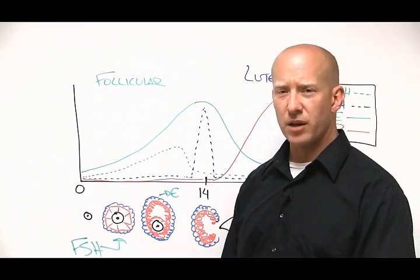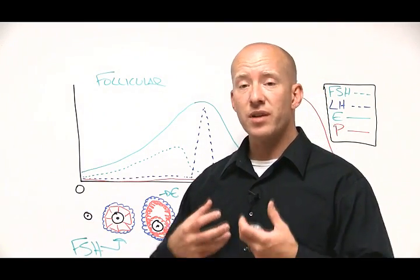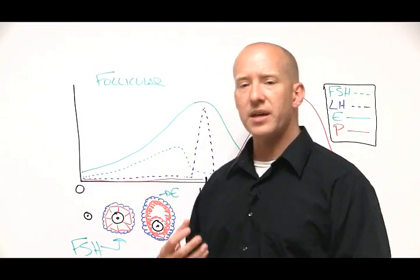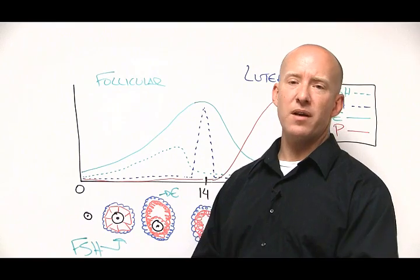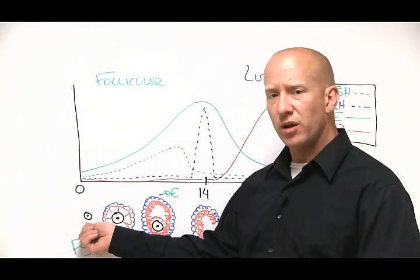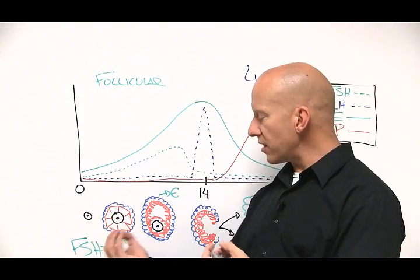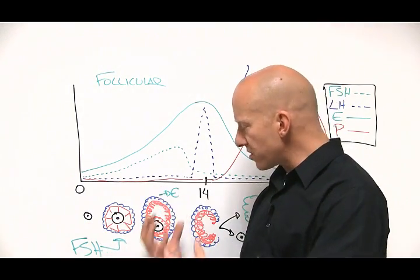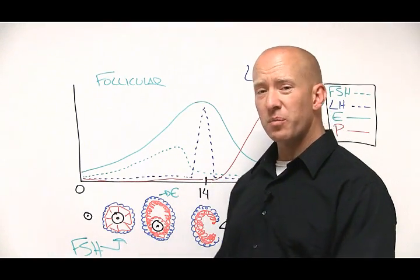FSH stands for follicle-stimulating hormone. At the beginning of every month, you have a number of eggs or follicles that will start to mature towards being ovulated and deposited into the fallopian tube and for the possibility of pregnancy. Under the influence of FSH, or follicle-stimulating hormone, these follicles start to mature, and notice that they do mature. They get more and more cellular material around them, and these follicles are actually what's making estrogen.